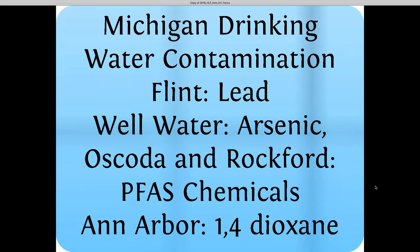Michigan's drinking water has, unfortunately, a lot of different contaminants in it, and it really depends on where you are. Folks are probably quite familiar with the Flint water crisis and the population-wide likely exposure to lead there in people's own homes. In rural areas of Michigan and certain areas, you have natural occurrences of arsenic that can contaminate well water in particular. In areas like Oscoda and Rockford and surrounding areas, we have some contamination that's recently been getting a lot more press coverage on polyfluorinated chemicals or PFAS chemicals.